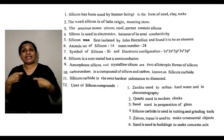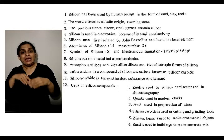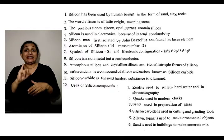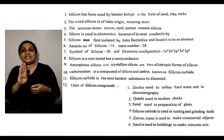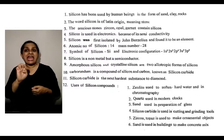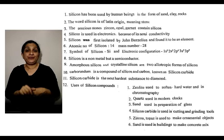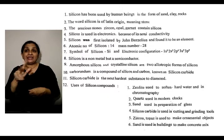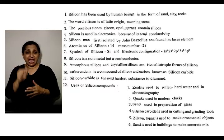Silicon is used in electronic equipment because of its semiconductivity. Silicon was first isolated by Jöns Jacob Berzelius, who established that it is an element. The atomic number of silicon is 14, the atomic mass is 28, and the symbol of silicon is Si.